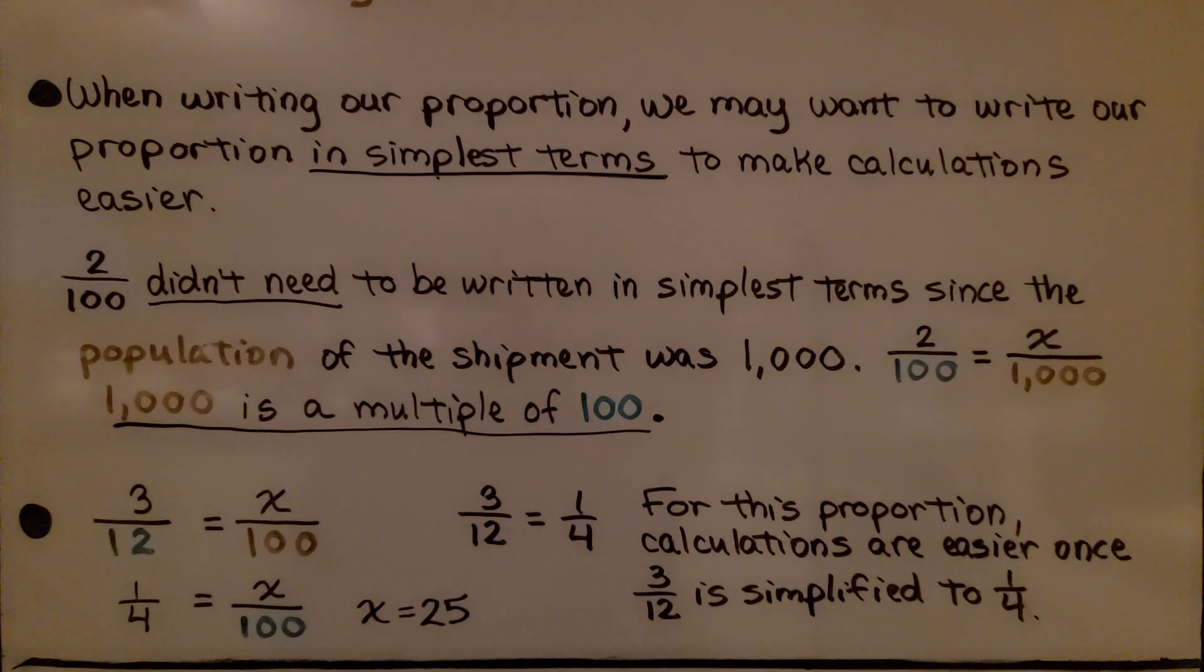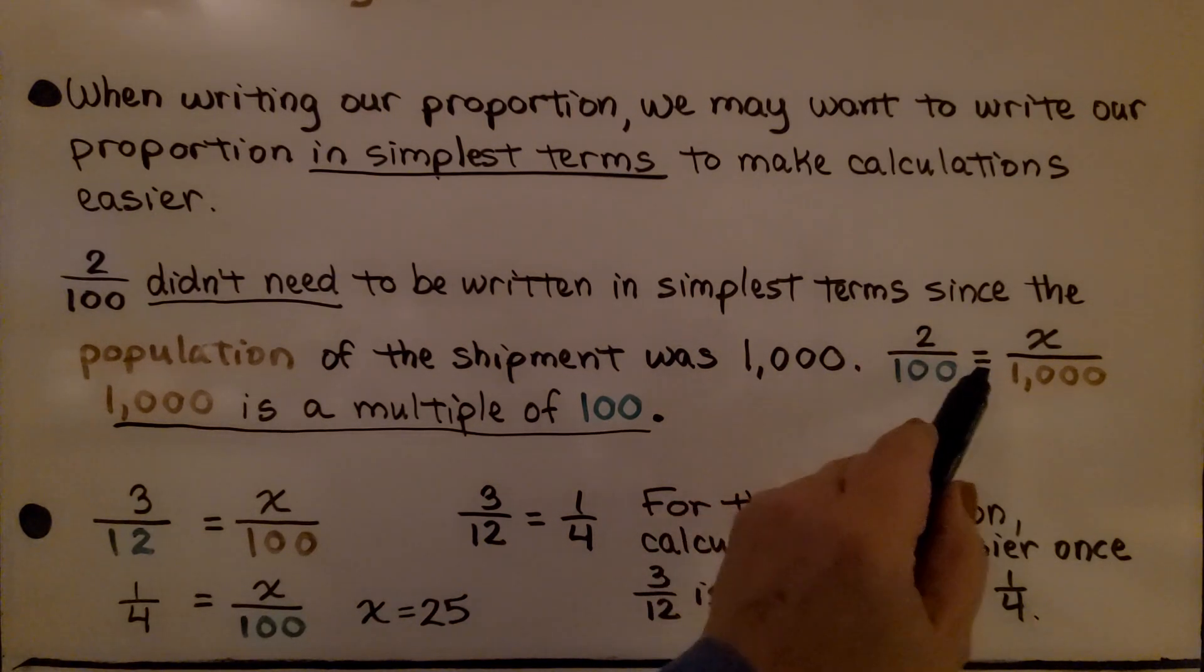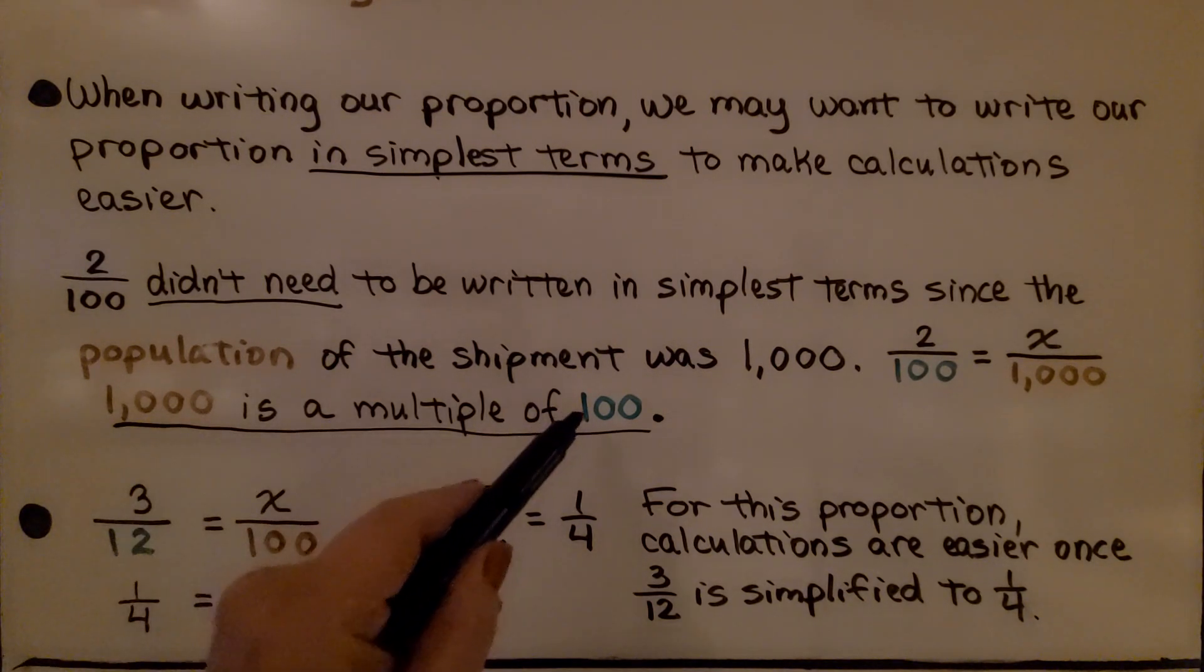When writing our proportion, we may want to write our proportion in simplest terms to make calculations easier. 2/100 didn't need to be written in simplest terms since the population of the shipment was 1,000. We have 2/100 equals x/1000. One thousand is a multiple of 100.